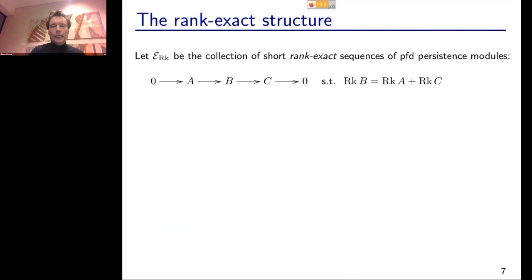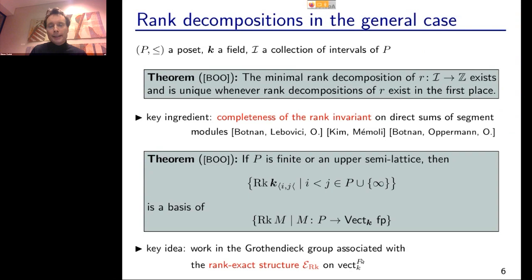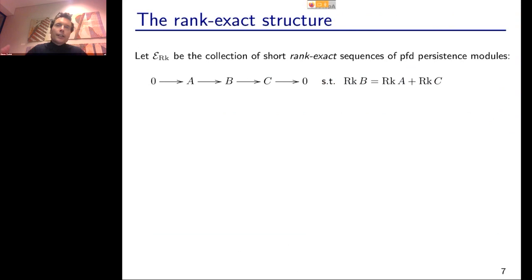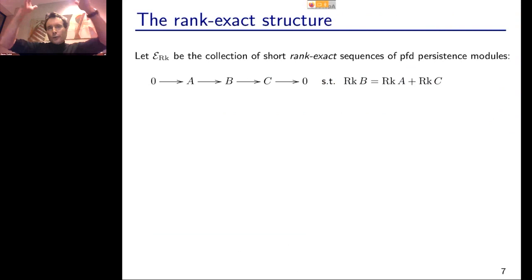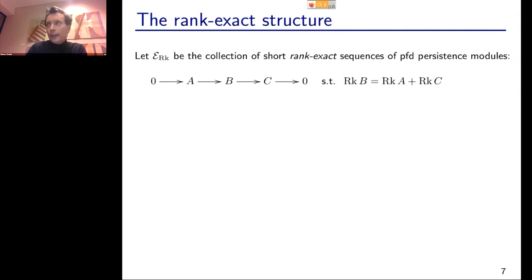We work with the category of persistence modules over POSETs, assuming modules are pointwise finite dimensional. This category has a whole collection of short exact sequences. The problem with the rank invariant is that — in contrast to the Hilbert function — it is not additive on every short exact sequence. You do have it for split exact sequences since the rank invariant is additive on direct sums, but not always in general.